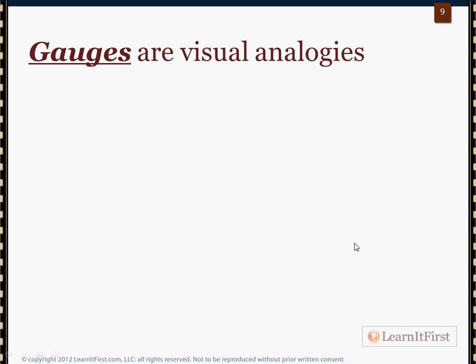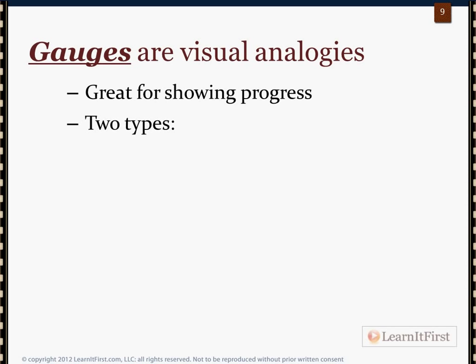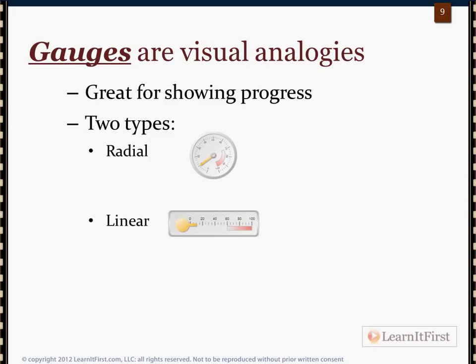Gauges are just little visual analogies — things we're used to seeing probably on a day-to-day basis. I think they're best for showing progress towards a goal. You get two types: a radial gauge, like what you would see on your car or motorcycle, and a linear gauge, which would be somewhat like a thermometer. We can set ranges and target ranges within those, and see where we are along a pathway.